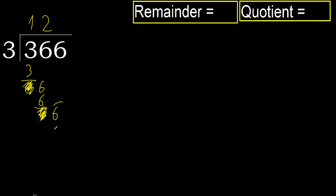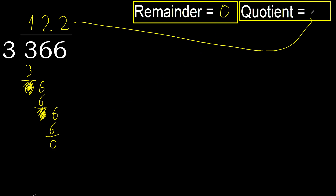Bring down the 6. 3 multiplied by 2 is 6 — not greater. Subtract. There is no remaining number, so we finish. 366 divided by 3 is 122.